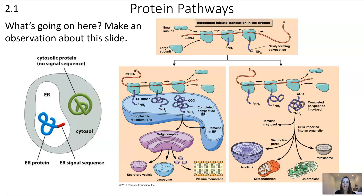Looking at the orange box on the left: one possibility is that the ribosome connects to the ER — rough ER is where ribosomes attach — and finishes protein production into the ER, so that protein ends up inside the ER. That protein can then be transferred to the Golgi complex and then to secretory vesicles, lysosomes, or the plasma membrane. In the box on the right, the ribosome never goes to the ER, so the protein is produced in the cytosol and ends up either remaining there or going into an organelle within the cell.